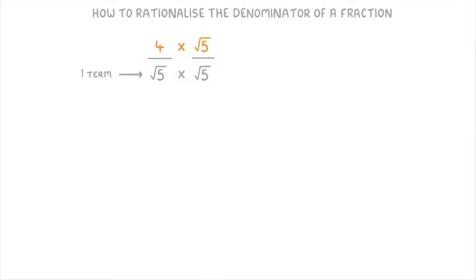This works because 4 times root 5 is 4 root 5, and root 5 times root 5 is just 5. So we no longer have a surd in our denominator.